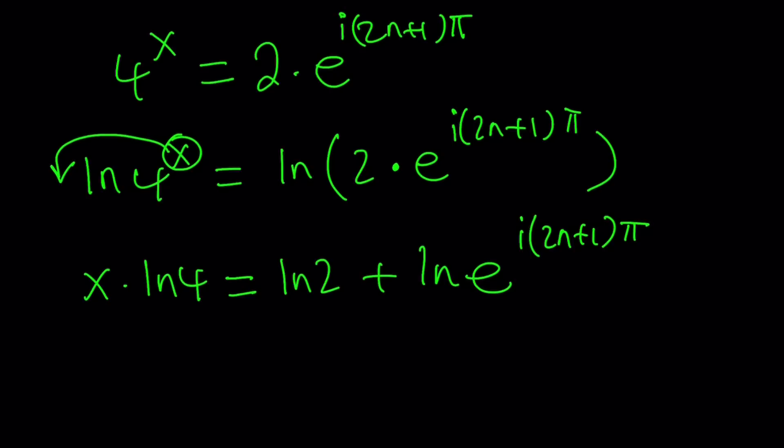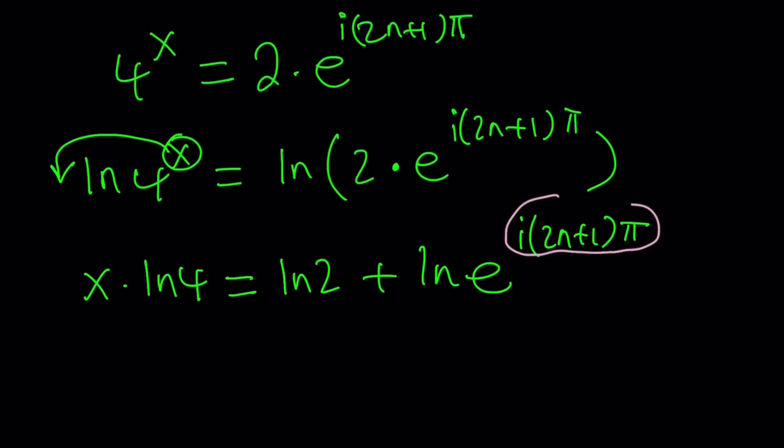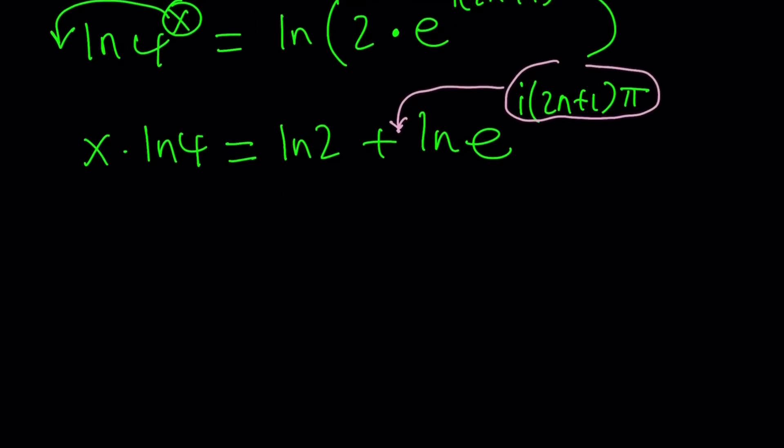Now let's go ahead and move the other exponent to the front. So this guy over here is going to go here. Then we're going to end up with something like this. x times ln 4 equals ln 2 plus i times 2n plus 1 pi. ln e is 1, so I don't have to worry about it.